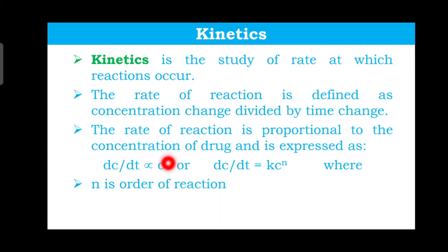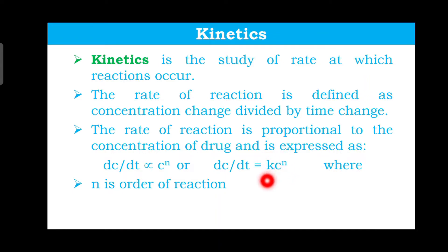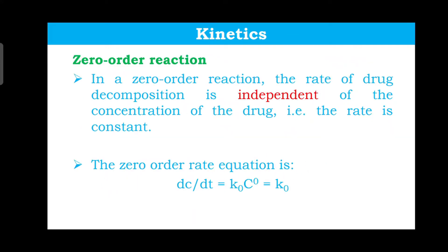In general, the rate dc/dt is proportional to the concentration of the drug to the power n, where n is the order of the reaction. More specifically, dc/dt is equal to k times C to the power n, where k is the rate constant and n is the order of the reaction. This is the general expression for the rate.